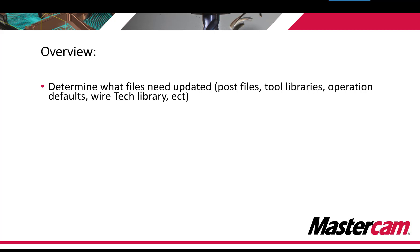First, we want to determine what type of files we're going to be updating. We're probably going to update our post files — this includes machine, control, and post files. We also might have tool libraries, or if we have specific defaults or operation libraries, or tech libraries for wire machines, we'll probably want to update those as well.